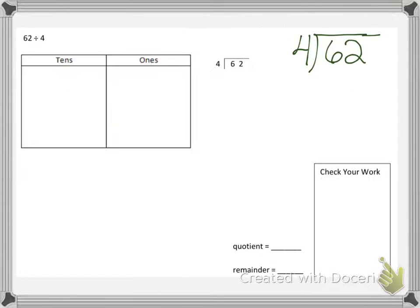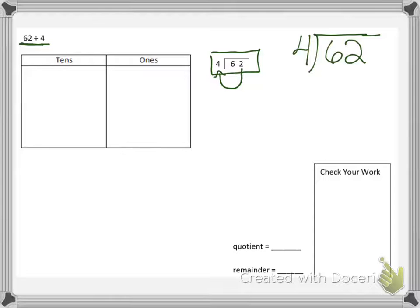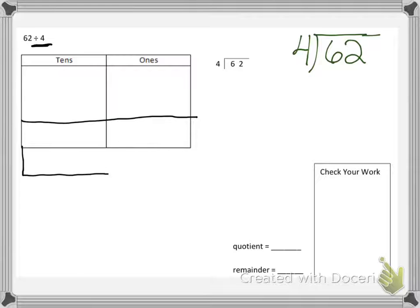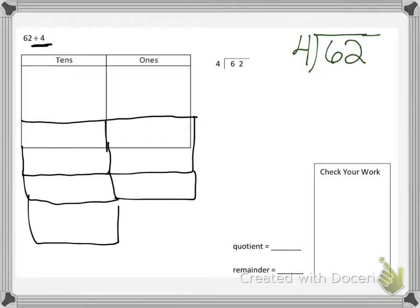Let's try our next one. Now we have 62 divided by 4. This is the way it looks — we read it 62 divided by 4. Remember, this is not 4 divided by 62. So now we're going to split up our place value chart. We're going to do this into 4 equal groups because we're dividing by 4. There's our 1, 2, 3, and 4. So we are showing that we have 4 equal groups because we're dividing by 4.